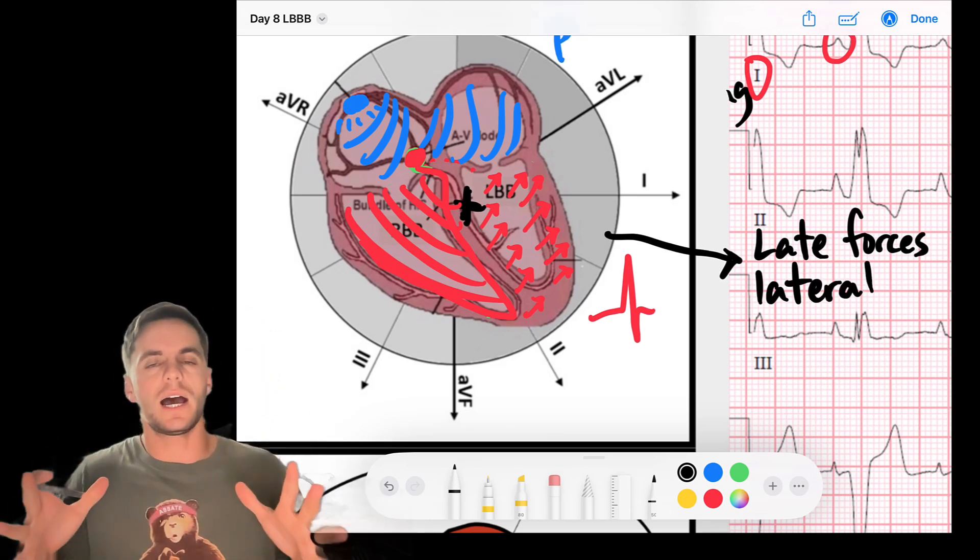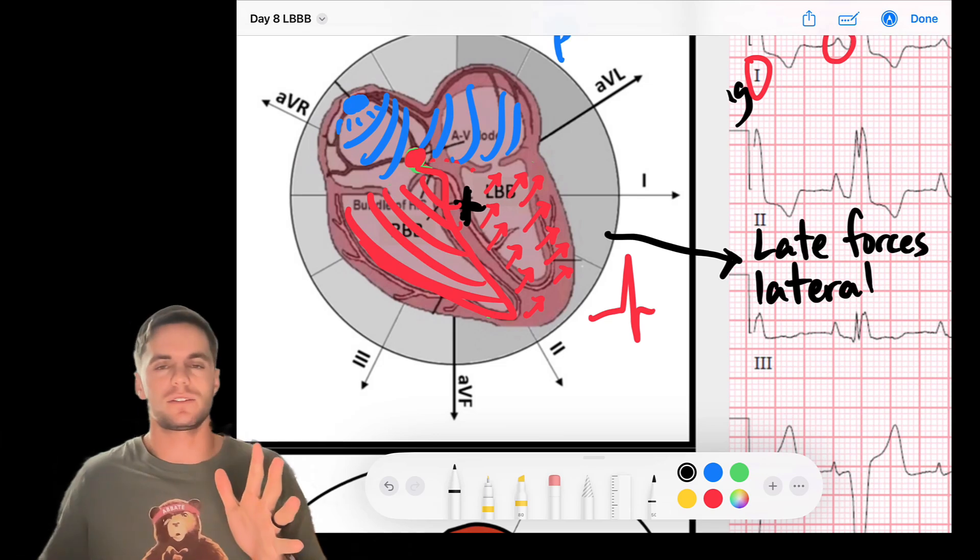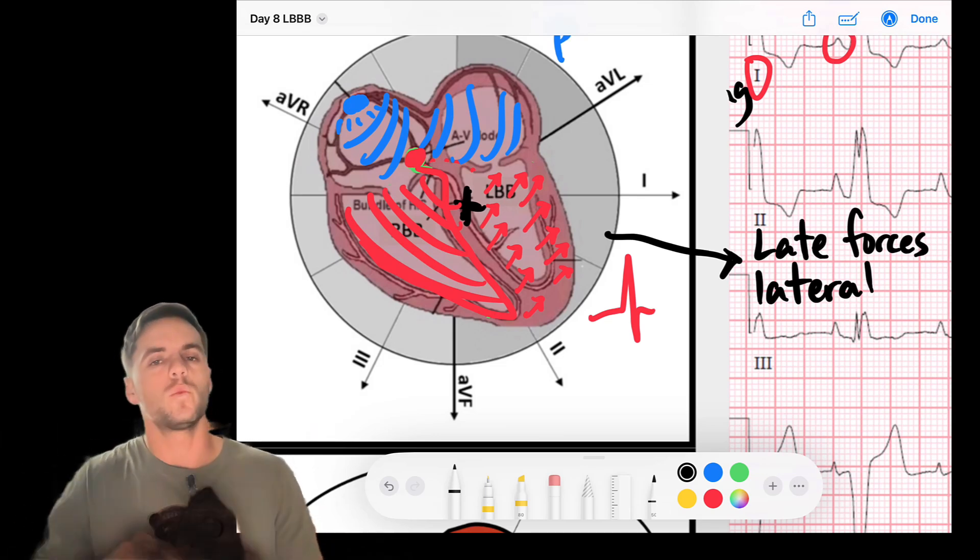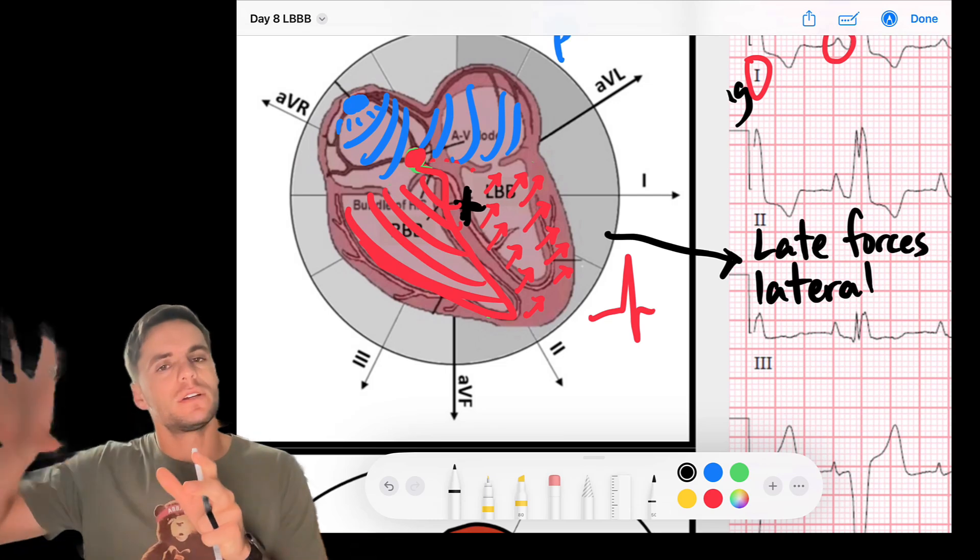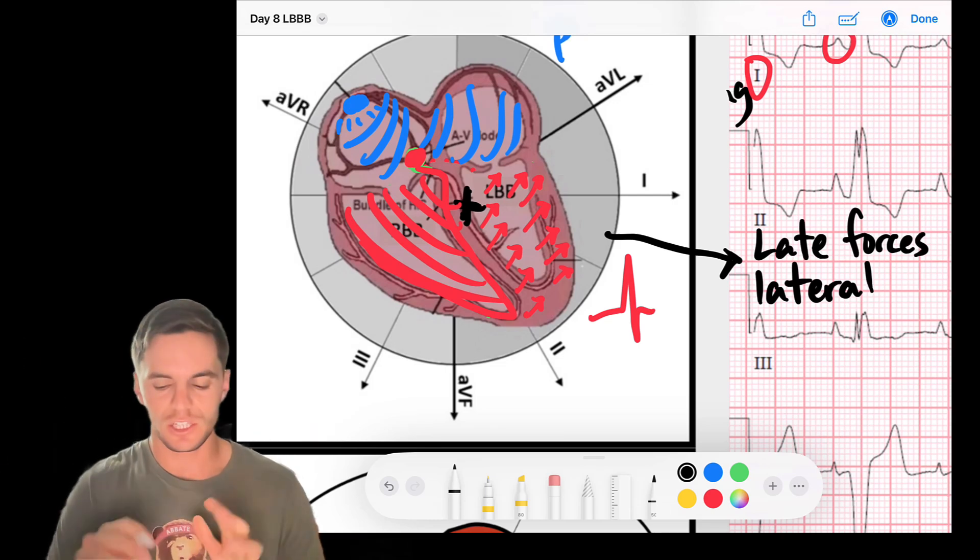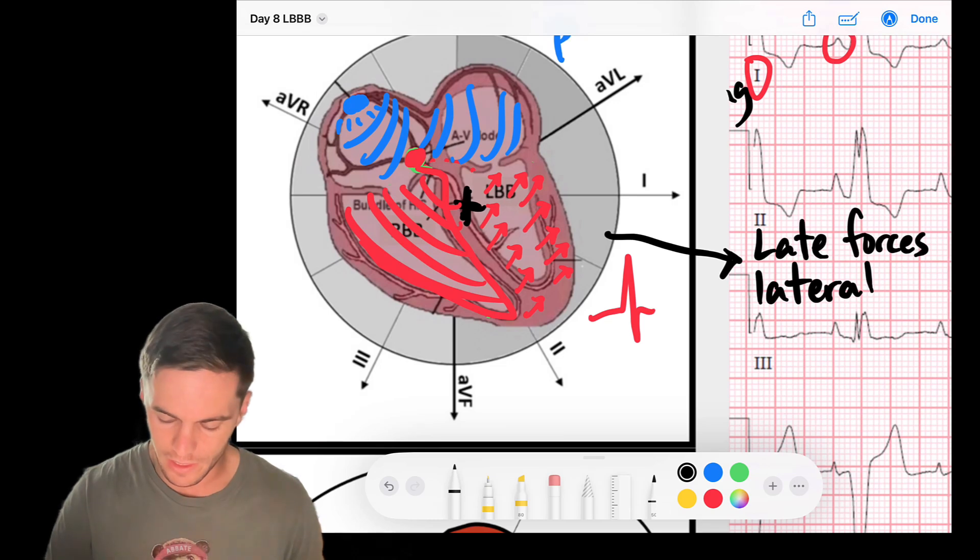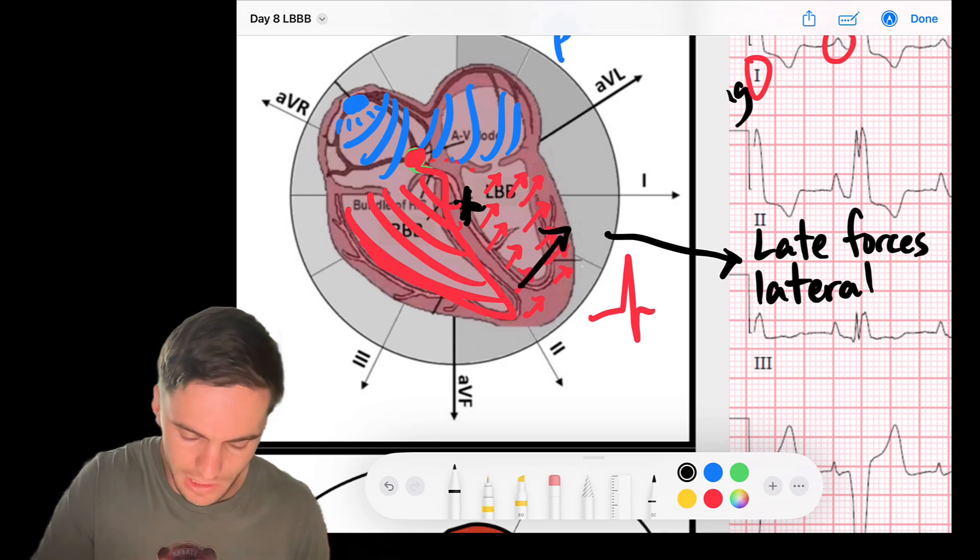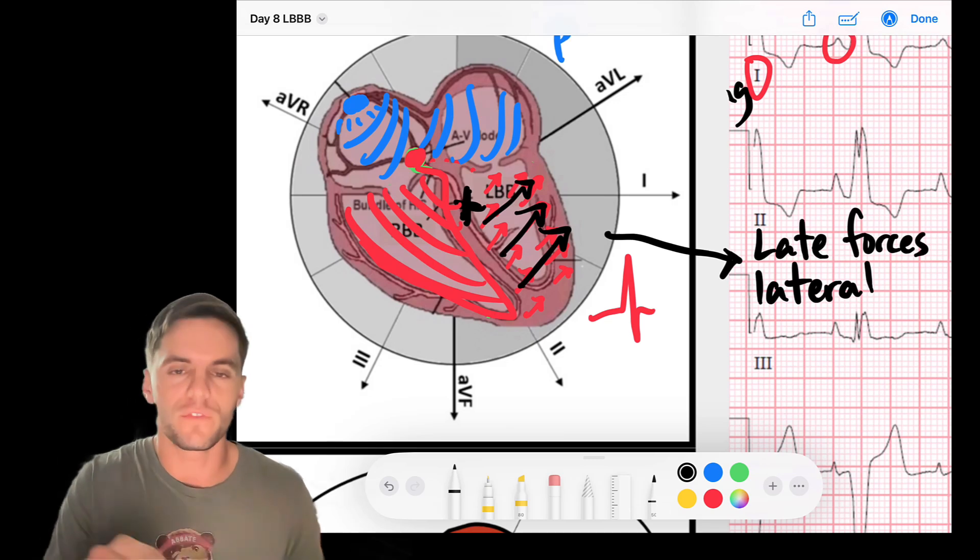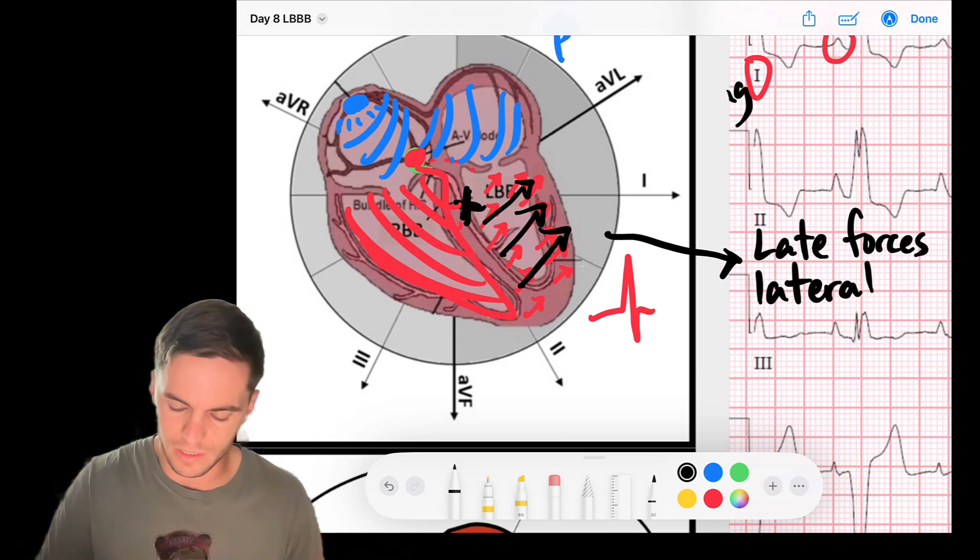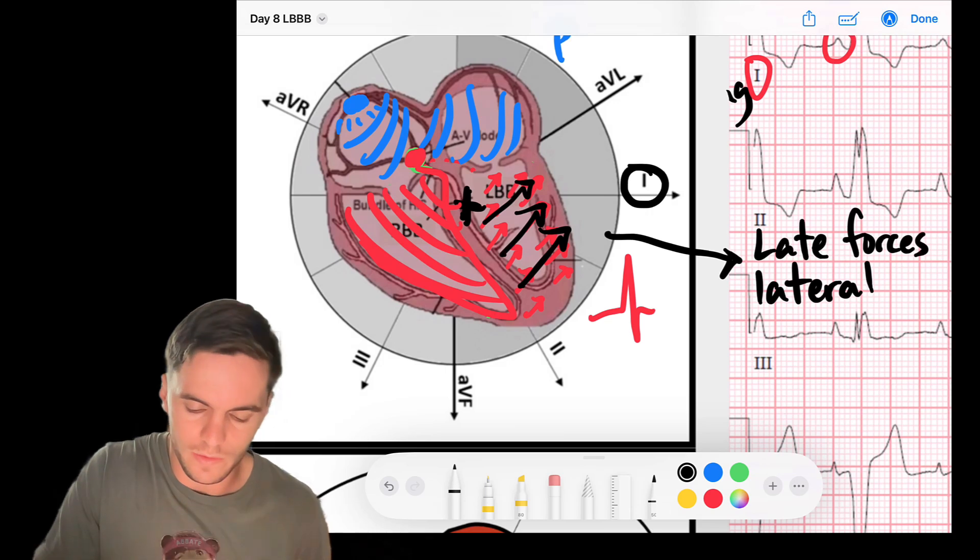So notice the direction of these forces. They're going lateral. So we're going to call this late forces heading laterally. So in the concept of time, remember time is our x-axis of our EKG. Towards the end of the QRS, we should see an extra positive deflection specifically in the leads that are lateral because we're heading in that direction. These late forces are heading to the lateral aspect.